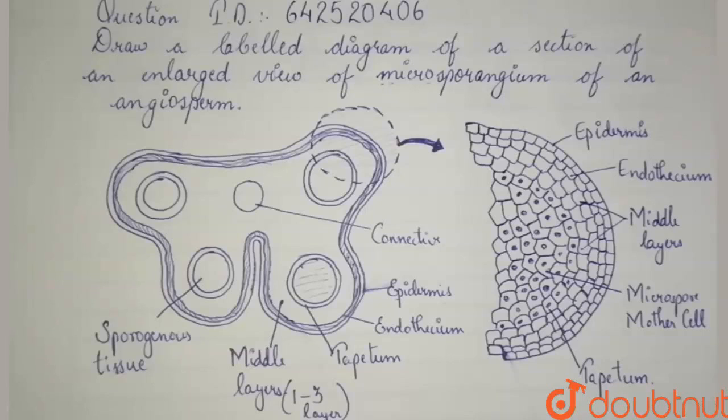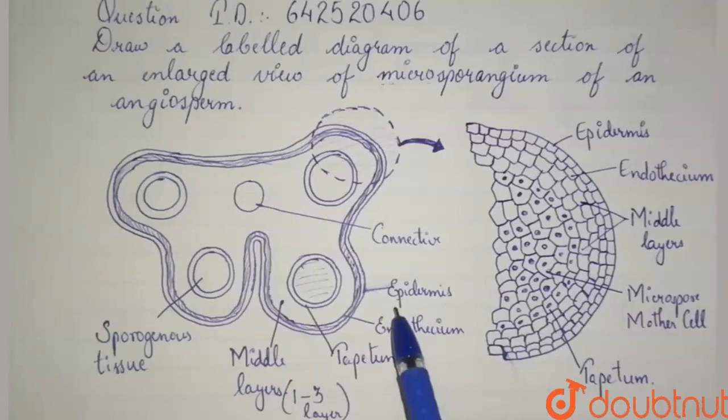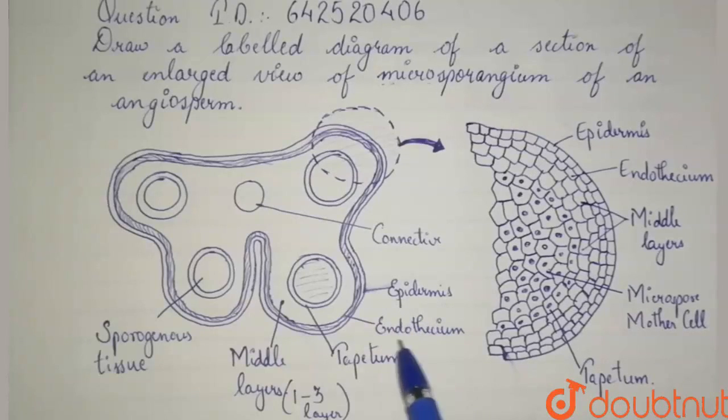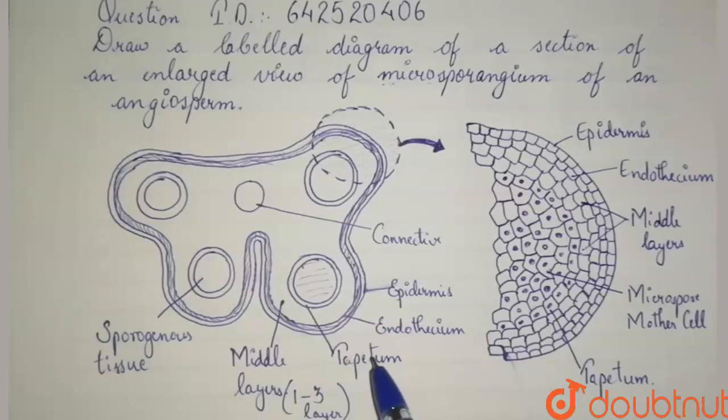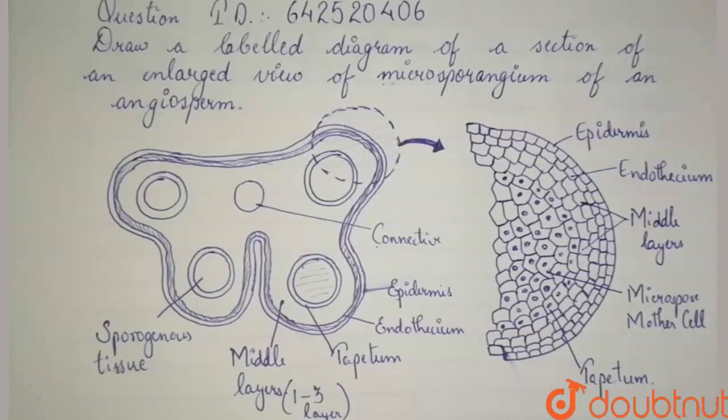Now, let's come to the parts of the microsporangium. The outermost layer of the microsporangium is called the epidermis. The epidermis is followed by the endothecium, which is followed by the middle layers, which is followed by the tapetum and finally the innermost, the sporogenous tissue. There is also a connective present here, which provides nourishment to the anther.